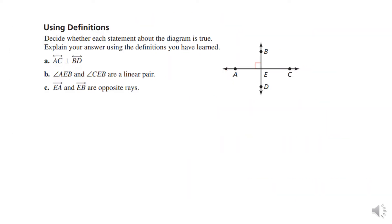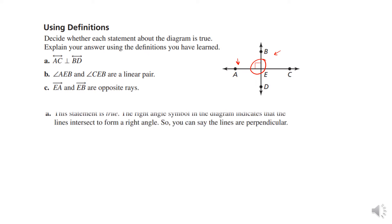Now decide whether each statement about the diagram is true. The first one: AC is perpendicular to BD. We know that's true because of the right angle symbol right there. The right angle symbol indicates that the lines form a right angle.